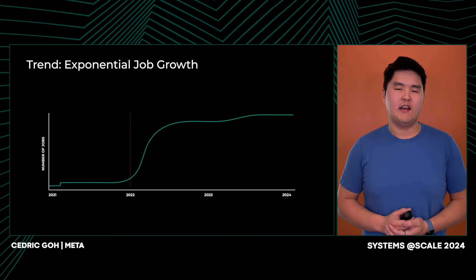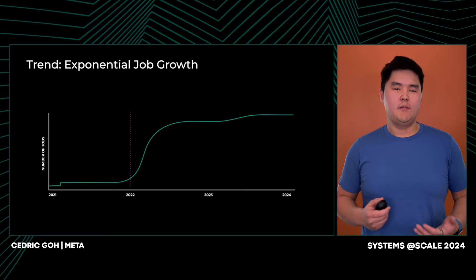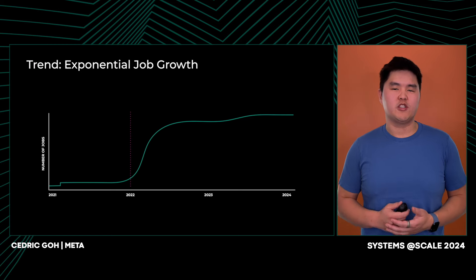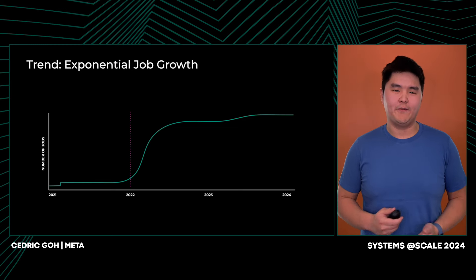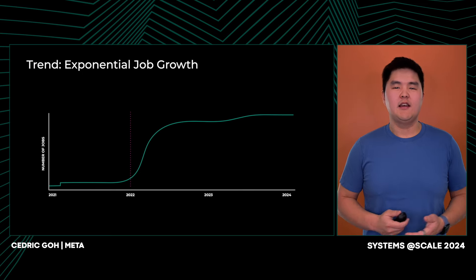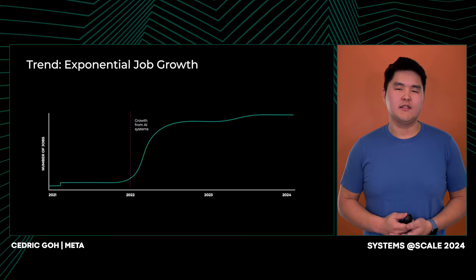Finally, we've seen a large increase in the number of jobs that Twine manages. Previously, most of Twine's workloads belonged to long-running services where jobs were not being frequently created. We did see increases in the number of jobs typically as part of new capacity being added to the fleet, such as during a new data center region being turned up. However, with the emergence of AI technologies, we've seen that jobs are dynamically being created, which has led to a tenfold increase in the number of jobs in the system.